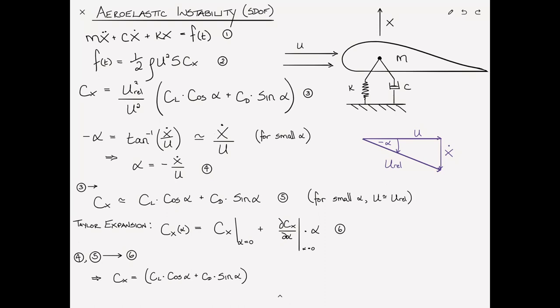If we take equation 4 and 5 now and we substitute it into equation 6, we end up with Cx is equal to CL times cosine α plus CD times sine α at α equals 0 plus dCx/dα times α, which is negative x dot over u. That's equation 7.